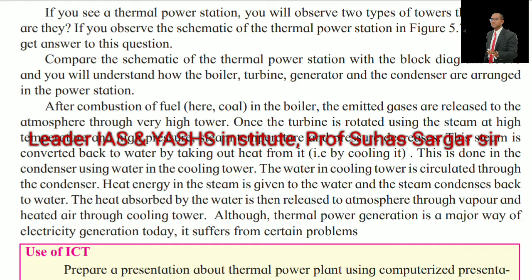After combustion of fuel, here coal, in the boiler, the emitted gases are released to the atmosphere through a very high chimney. Once the turbine is rotated using steam at high temperature and high pressure, the steam temperature and pressure decreases. The steam is converted back to water by cooling it in the condenser using water in the cooling tower. The water in the cooling tower is circulated through the condenser. Heat energy in the steam is given to the water and the steam condenses back to water. The heat absorbed by the water is then released to the atmosphere through vapor and heated air.